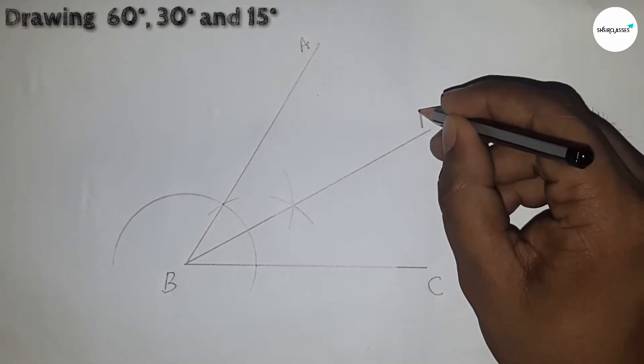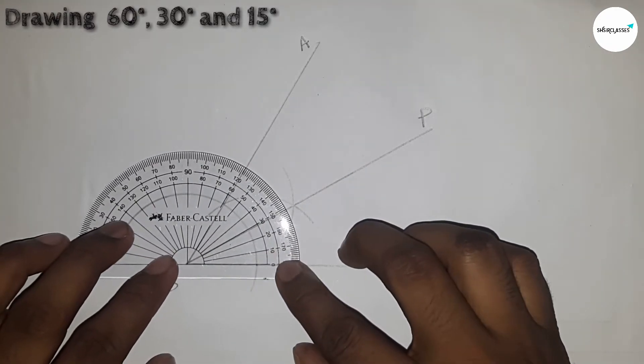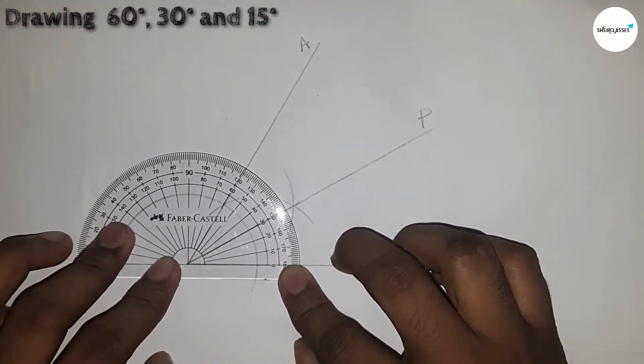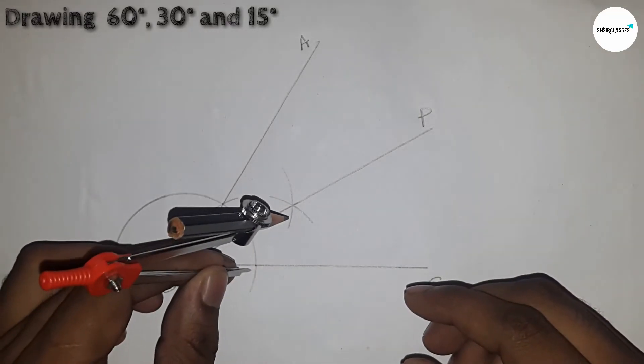So this is P point. Now I am checking whether it is 30 or not. This is 30 degree angle.